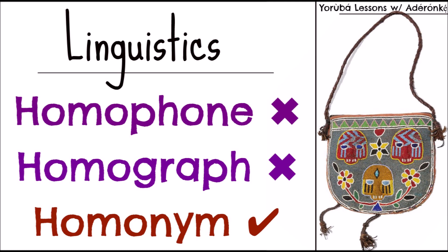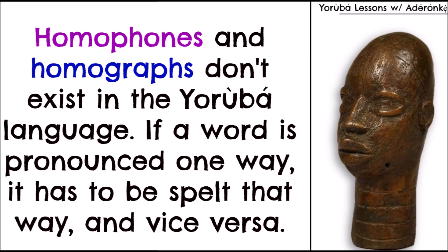Homophones and homographs don't exist. The next question would be, why don't they exist? Well, in the Yoruba language, if a word is pronounced one way, it has to be spelled that way and vice versa. Because the Yoruba language is a tonal language, if a word is spelled one way, it has to be pronounced that way. Let's start by defining homophones and homographs so that we can see why they don't exist in the Yoruba language.